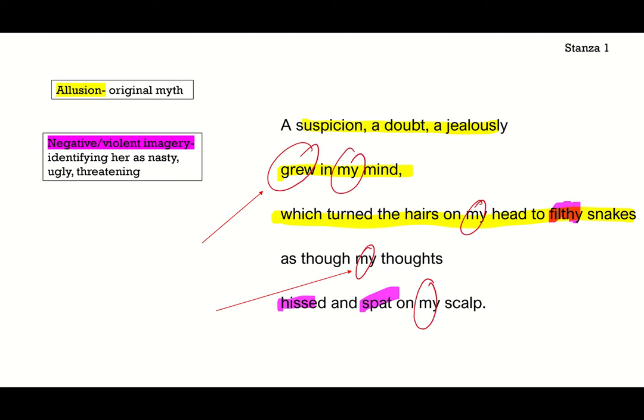And there's this word 'grew' — the diction, the word choice: 'a suspicion, a doubt, a jealousy grew in my mind.' That really gives the impression of a slow change, like a development. There's nothing instantaneous about what she's talking about — it wasn't overnight. How she's feeling about herself has been a process that has taken time, which also foreshadows the rest of the poem.